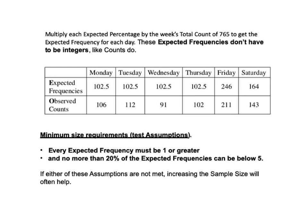Also, the chi-square test for goodness of fit has certain minimum size requirements, which are the test assumptions. Every expected frequency must be one or greater, and no more than 20% of the expected frequencies can be below 5. If either of these assumptions are not met, increasing the sample size will often help. You can see that our sample data in this example easily meet both of these assumptions.